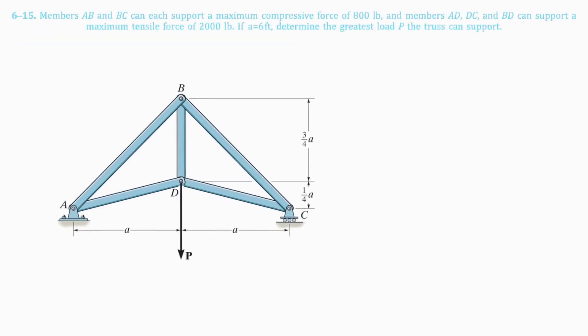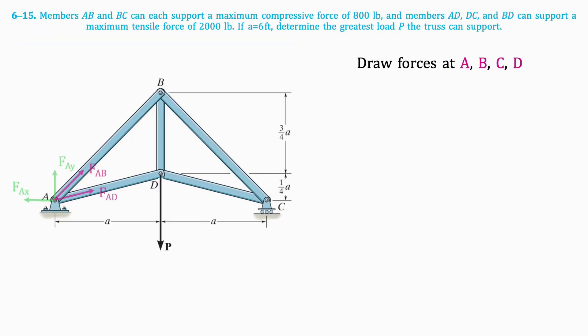First, we'll draw free body diagrams of the forces at joints A, B, C and D, assuming they are all tension forces. We will define tension forces as positive. Forces along trusses are drawn in pink and reaction forces are drawn in green.